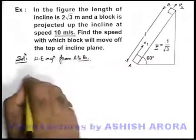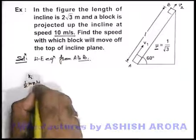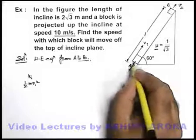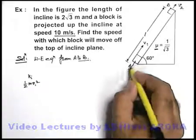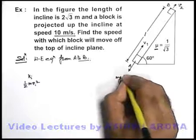We can see initial kinetic energy of the block was half m v1 square. We can see when it is going up, it was experiencing an opposing force due to a component of its weight. That will be mg sine 60 degrees.